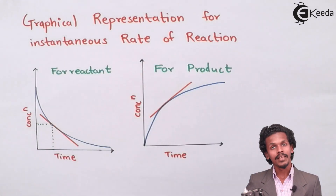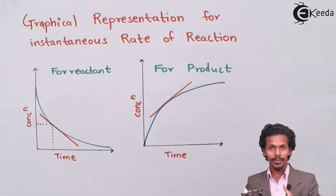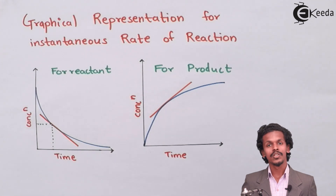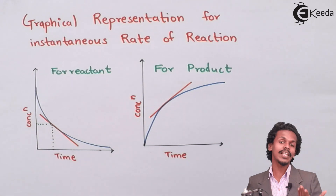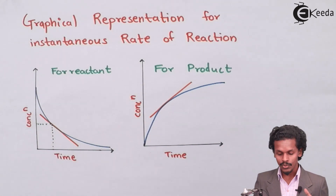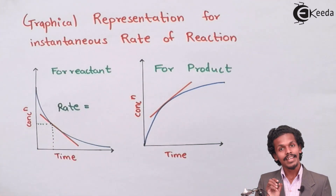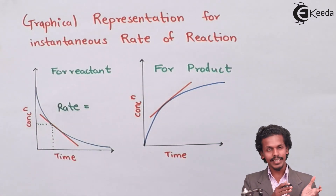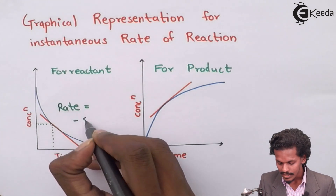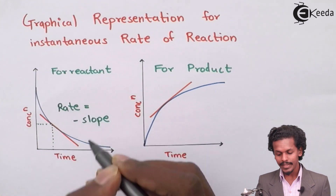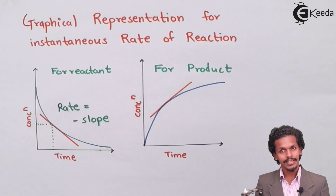We draw a tangent here, and since this tangent moves from higher to lower, it is a negative tangent. We determine the slope of this tangent, and by determining the slope of the tangent we can easily find out the rate of reaction. So the rate of reaction for the reactant is the negative slope determined by this tangent.